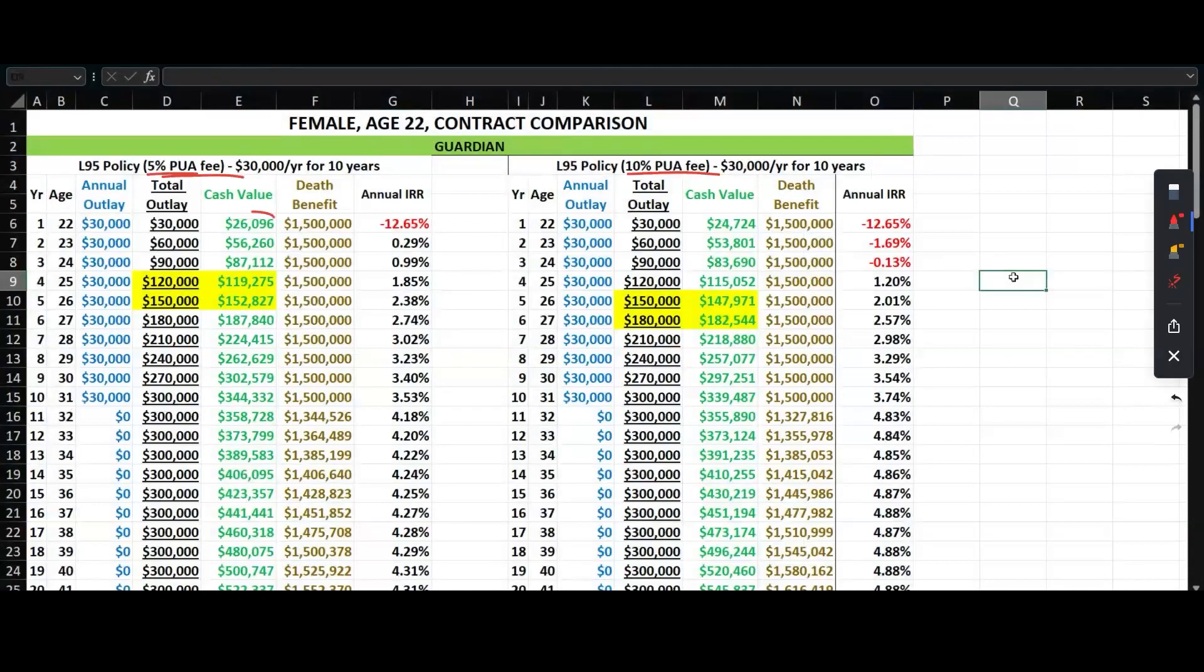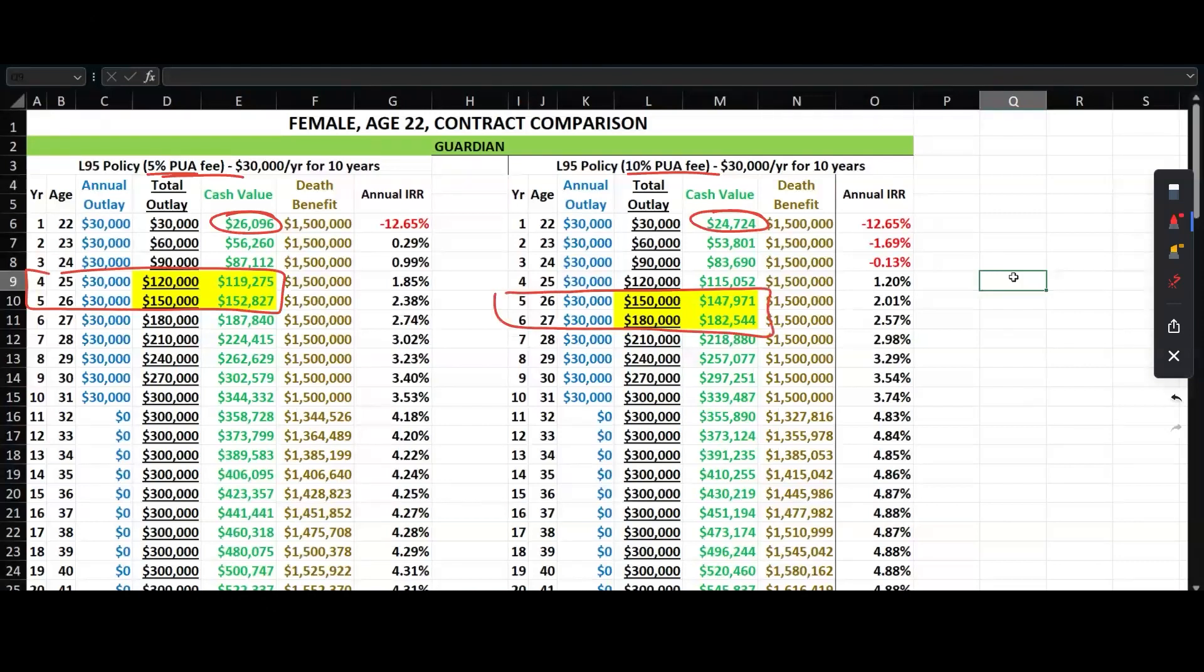Here we go. $26,000 upfront, $24,000 and change upfront. Same death benefits, these products are designed in an identical manner. The PUA fee is just different, that's why we see a difference in values. Break-even between years 4 and 5. This guy between 5 and 6. What we don't have here is the guarantees, we've got other videos that go through that where you'll see the 5% have more from start to finish.